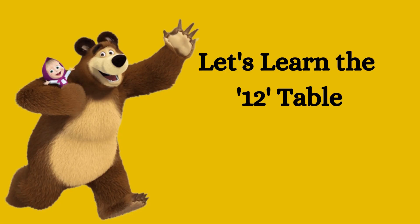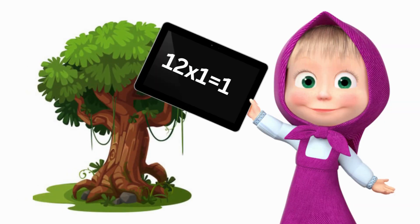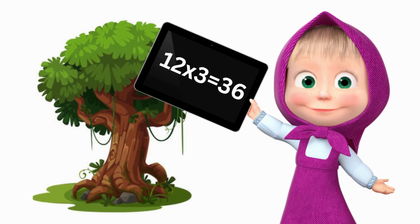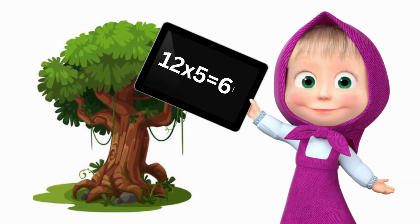Children, let's learn the 12 table. 12 ones are 12. 12 twos are 24. 12 threes are 36. 12 fours are 48. 12 fives are 60.